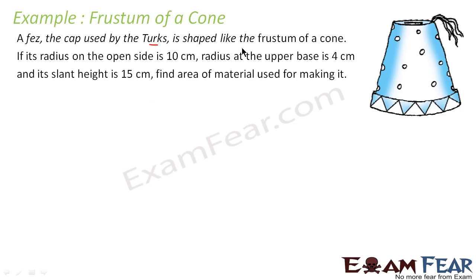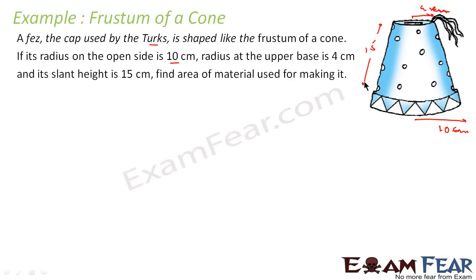Let's take one more example. A cap used by turban wearers is shaped like a frustum. The radius on the open side (bottom) is 10 centimeters and the radius of the upper base is 4 centimeters. The slant height is 15 centimeters. We have to find the area of the material used.